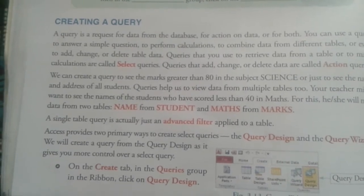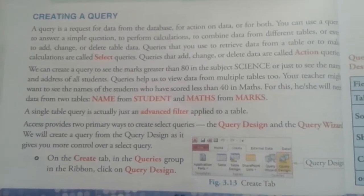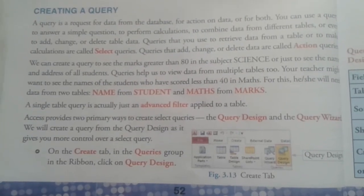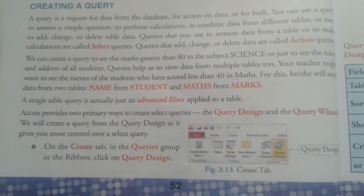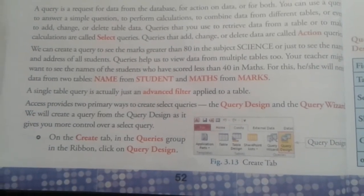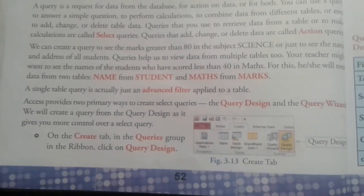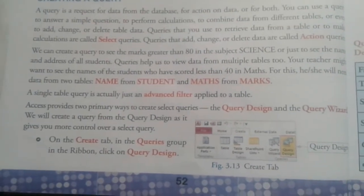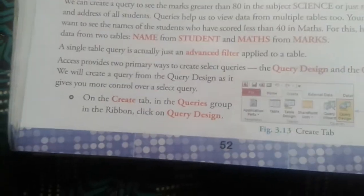For example, a teacher might want to see the names of students who have scored less than 40 marks. For this, data from two tables — name of student and marks — is needed. A query is actually just an advanced filter applied to a table. Through creating a query we can find out the names of students getting less than 40 marks or more than 40 marks.